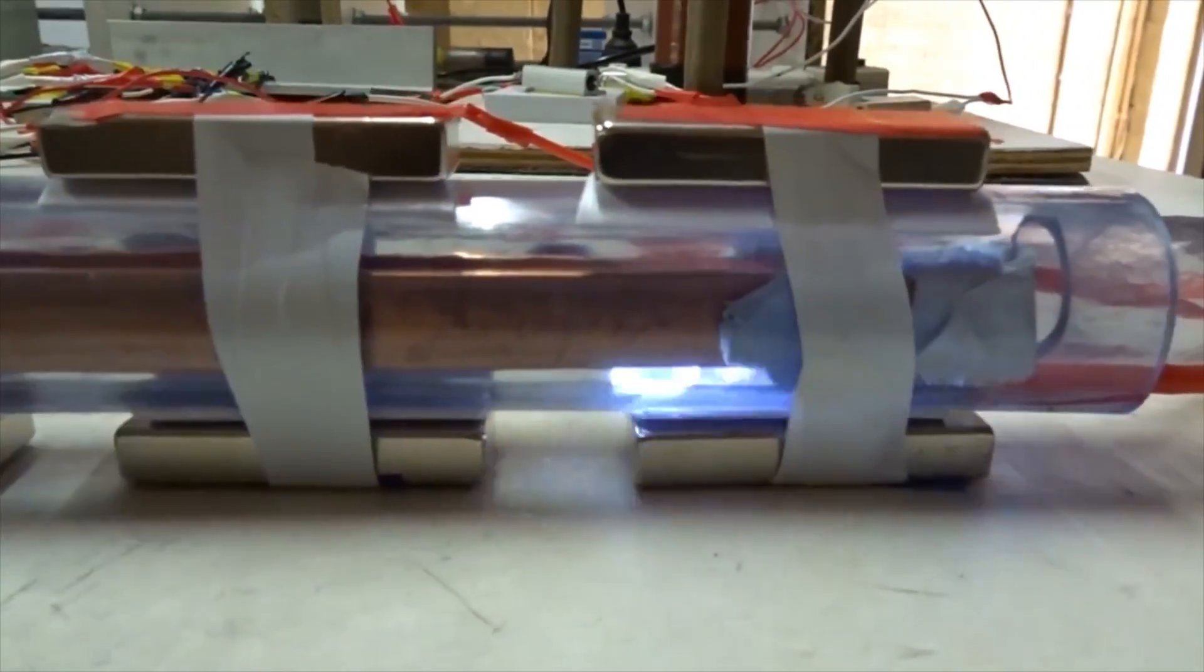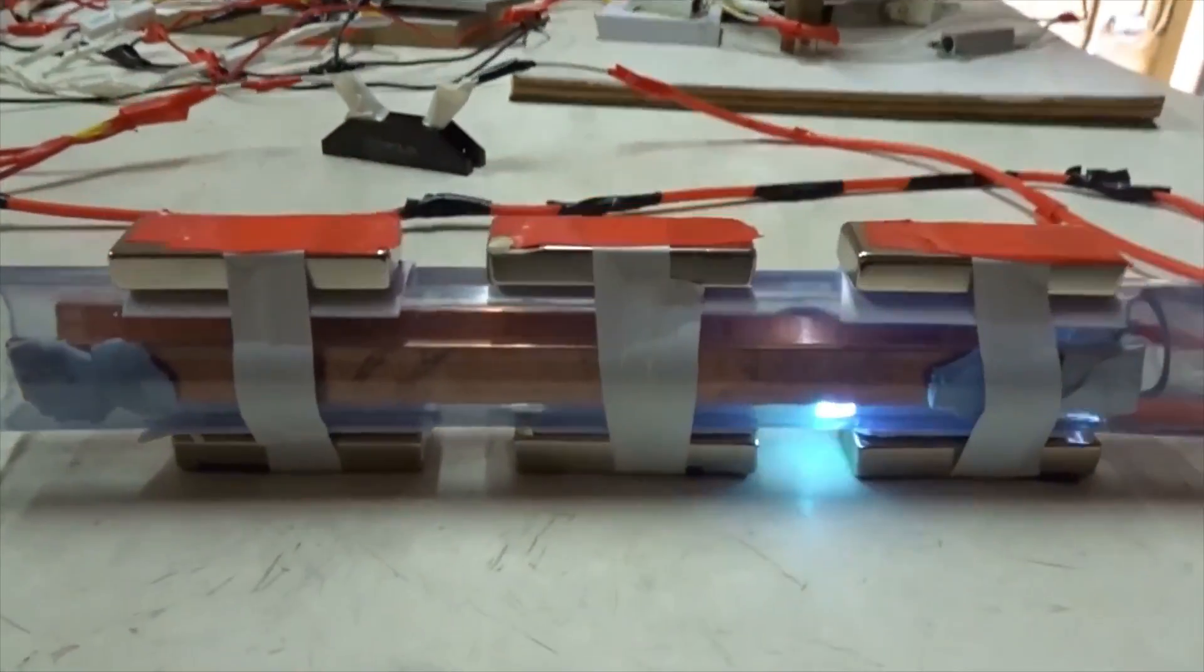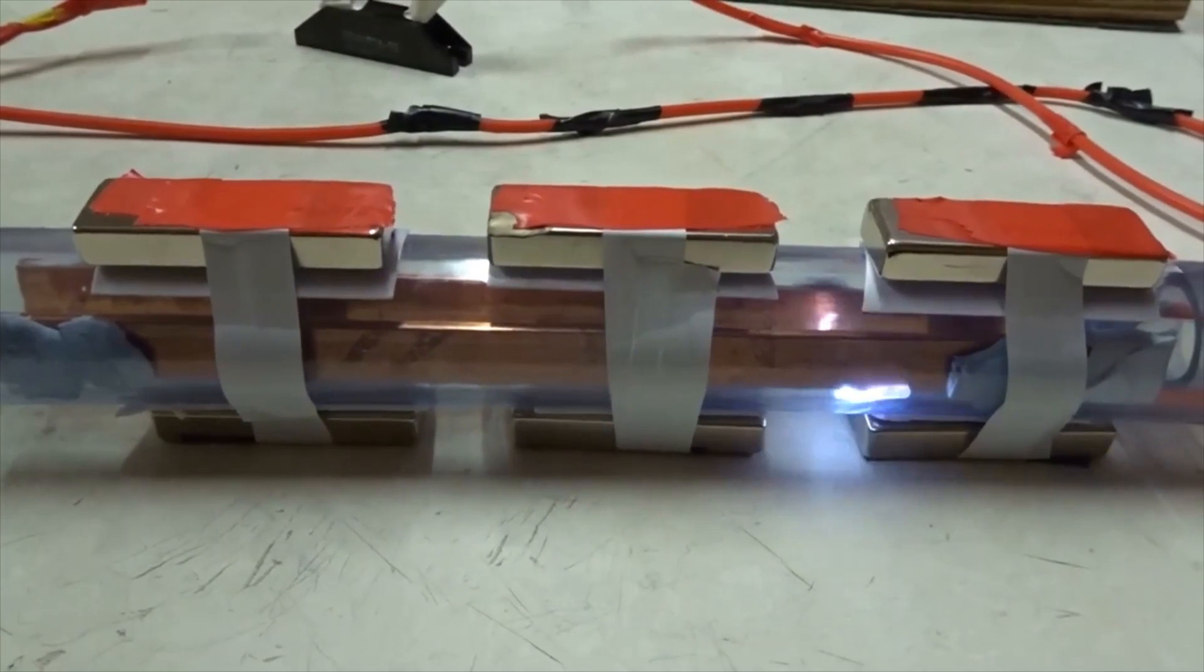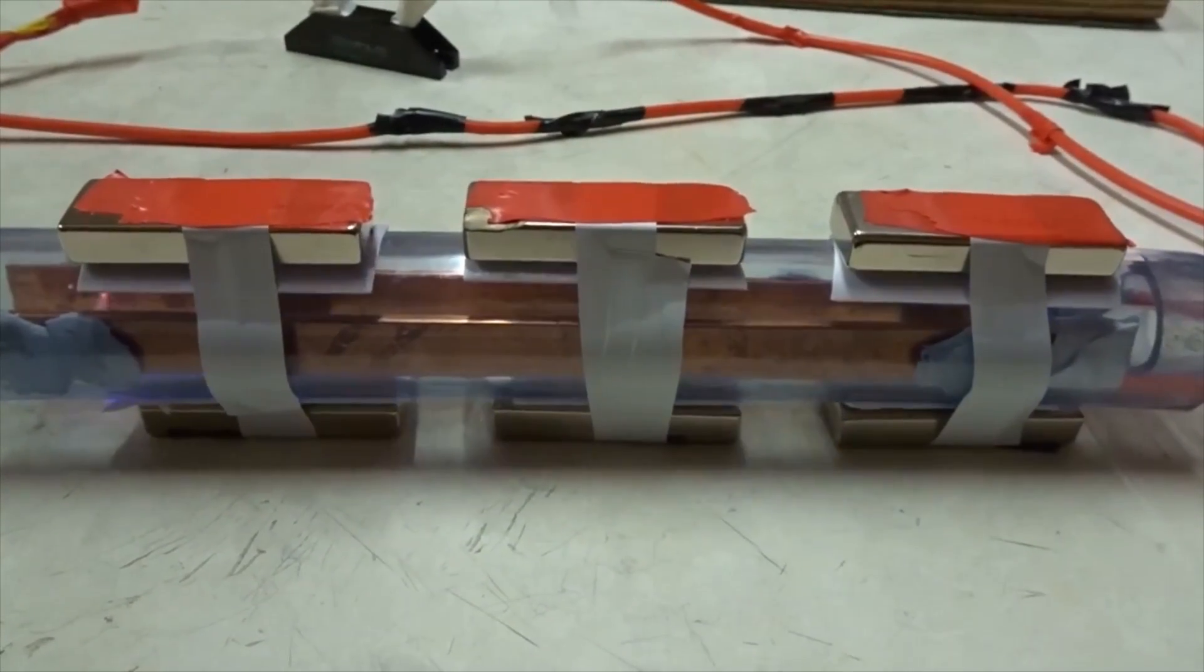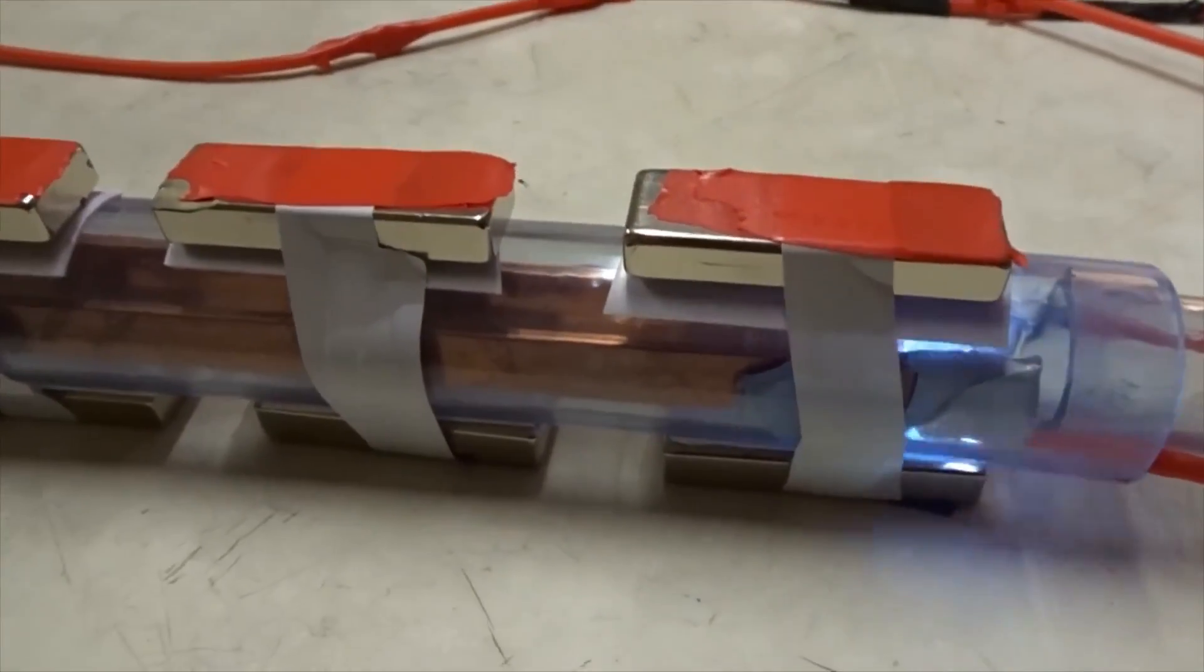And you can see the arcs are going very strongly from right to left. We reversed the polarity of the DC, now you can see the arcs are going the other direction.